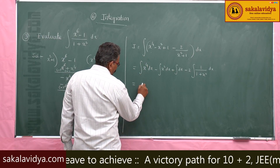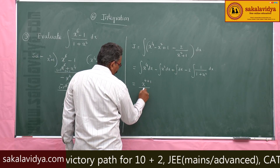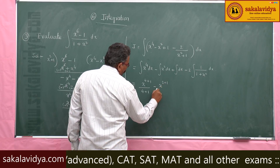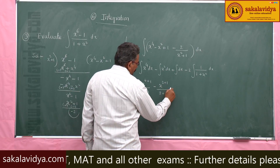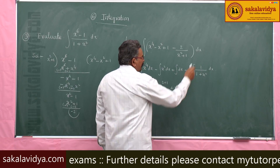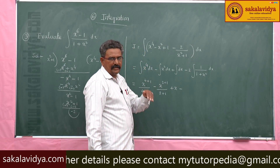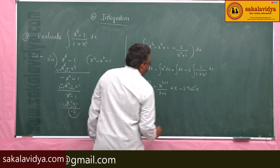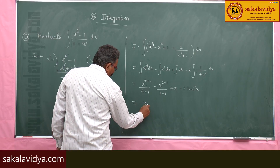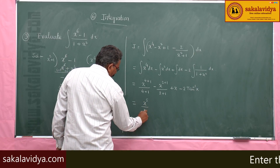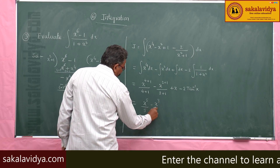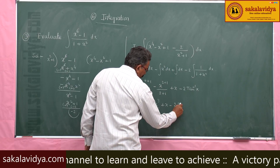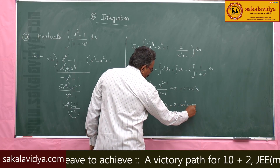This is x⁴⁺¹/(4+1) minus x²⁺¹/(2+1) plus x, minus 2 times tan⁻¹x. So the answer is x⁵/5 - x³/3 + x - 2 tan⁻¹x + C.